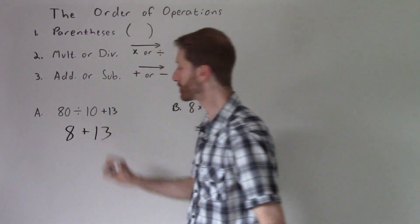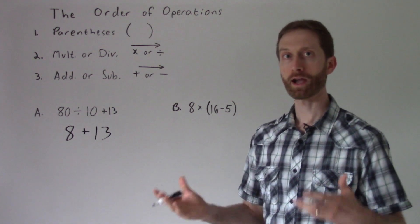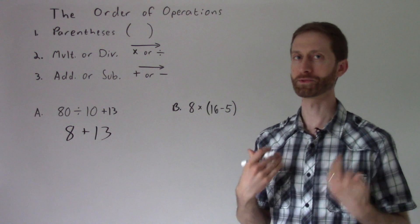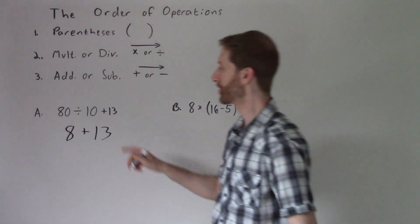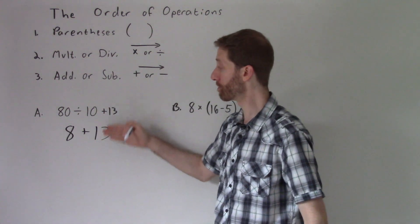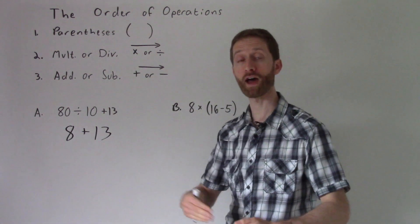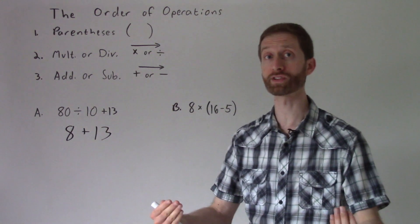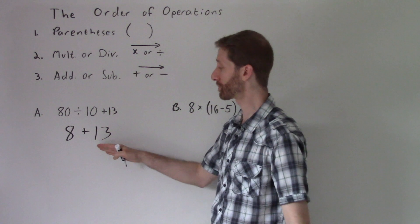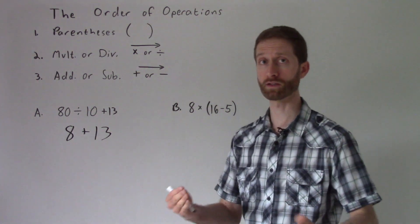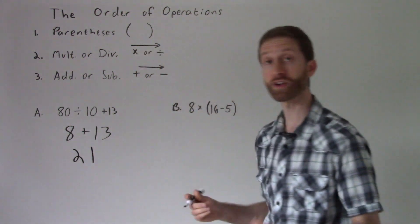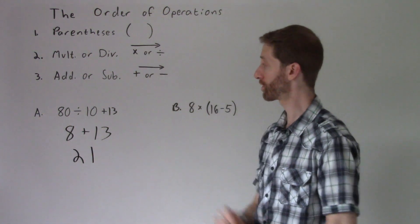And then what I tell my students often is I am a copy machine. So you want to become robotic in that. Any operations that you have yet to do get copied and moved on down the line so that you're not making any silly errors. What we have left is a pretty simple problem, 8 plus 13. There's only one operation left, and 8 plus 13 is 21. And that is our answer for that first problem.